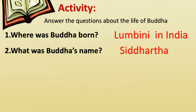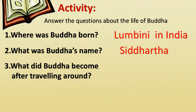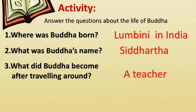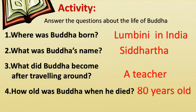Number two question: What was Buddha's name? Siddhartha. Number three question: What did Buddha become after traveling around? The answer is a teacher. Number four question: How old was Buddha when he died? The answer is 80 years old.